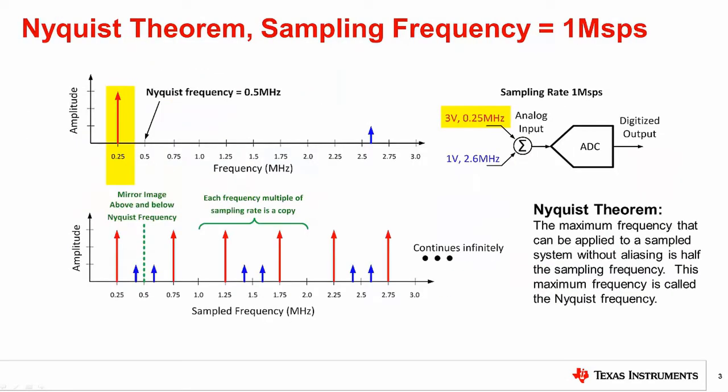Here is an example of a data converter with a sampling frequency of 1 mega sample per second, so the Nyquist frequency is 0.5 megahertz. For this example, a 3 volt signal is applied at 0.25 megahertz, and a 1 volt noise signal is applied at 2.6 megahertz. The signal at 0.25 megahertz is within the Nyquist band, and the signal at 2.6 megahertz is far beyond the Nyquist frequency and will generate aliases. Remember, FFT results repeat each other in increments equal to the sampling rate.